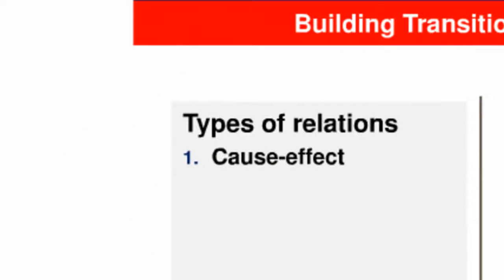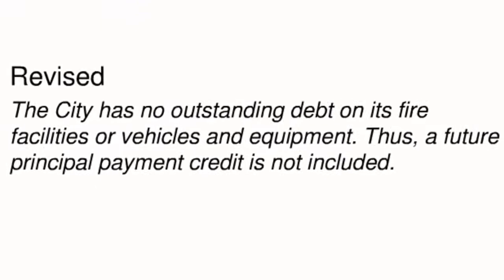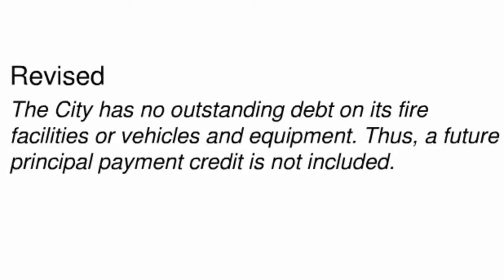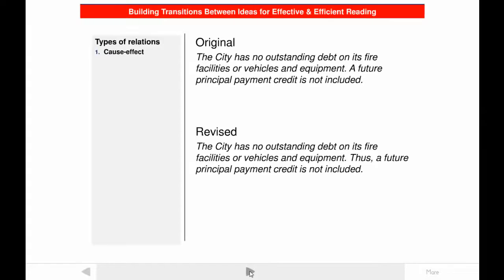The first type of relation that can be shown by transitions is cause and effect. Look at the passage from the executive summary of the planning consultant's report and tell me what you think the relation is between the ideas expressed in the two sentences. Most of us will probably agree the relation is cause and effect — the cause is expressed in the first sentence and the effect in the second. The writer could make the message more effective and efficient by inserting a transition like "thus." The use of transitions improves effectiveness because the reader is much less likely to be confused about the meaning intended by the writer. In addition, the use of transitions improves efficiency because the reader doesn't have to think as long about what the writer's logic is.